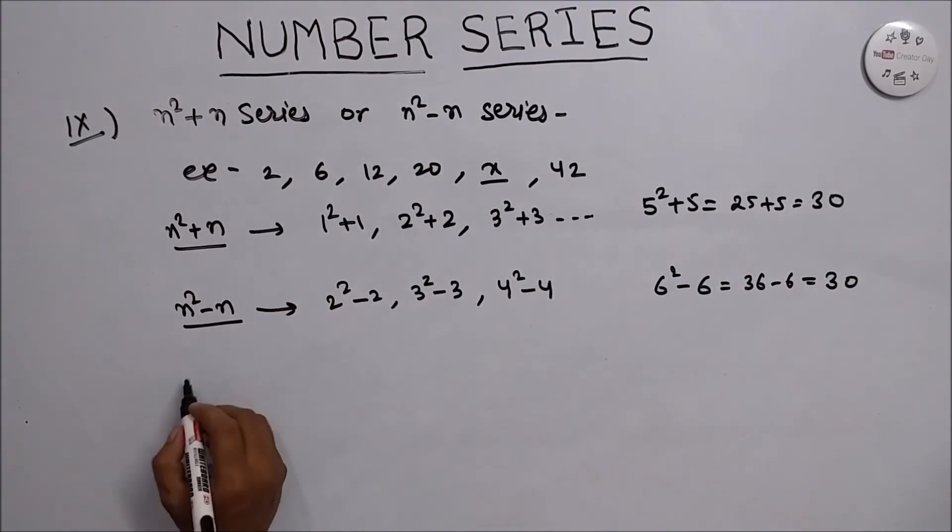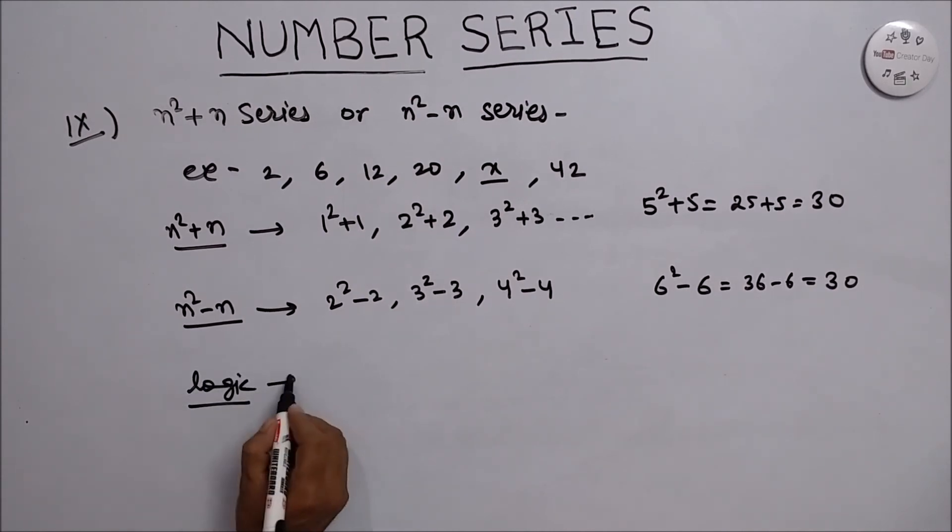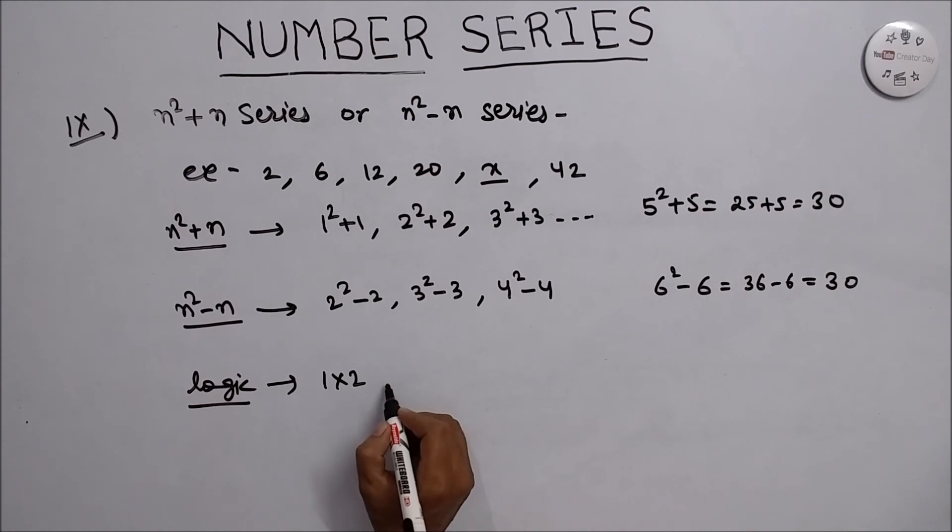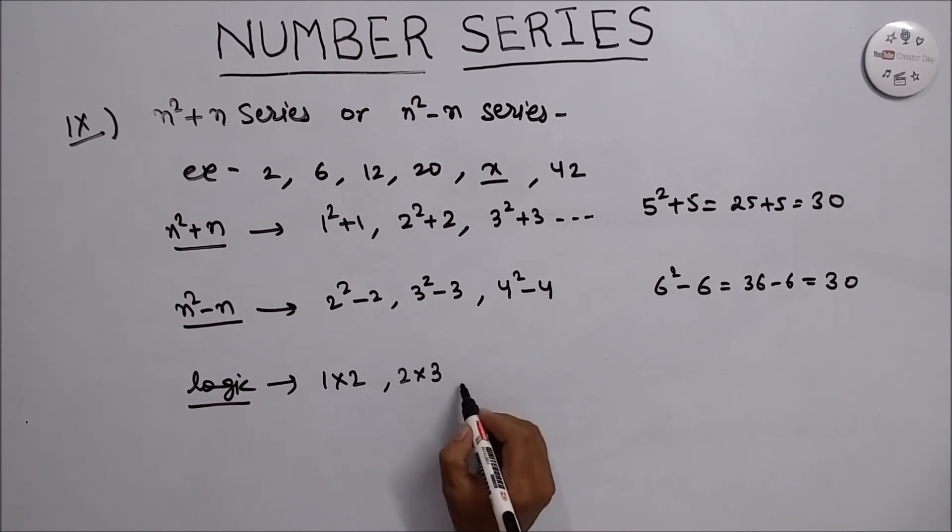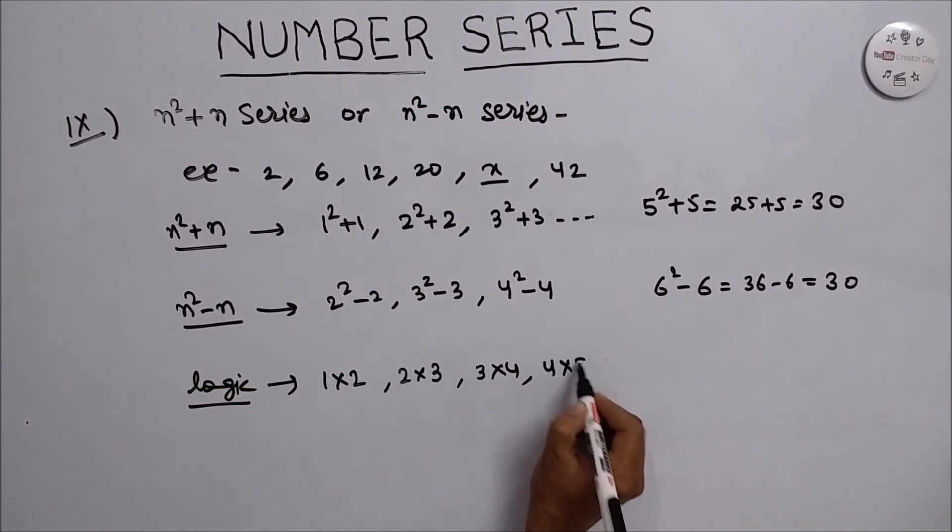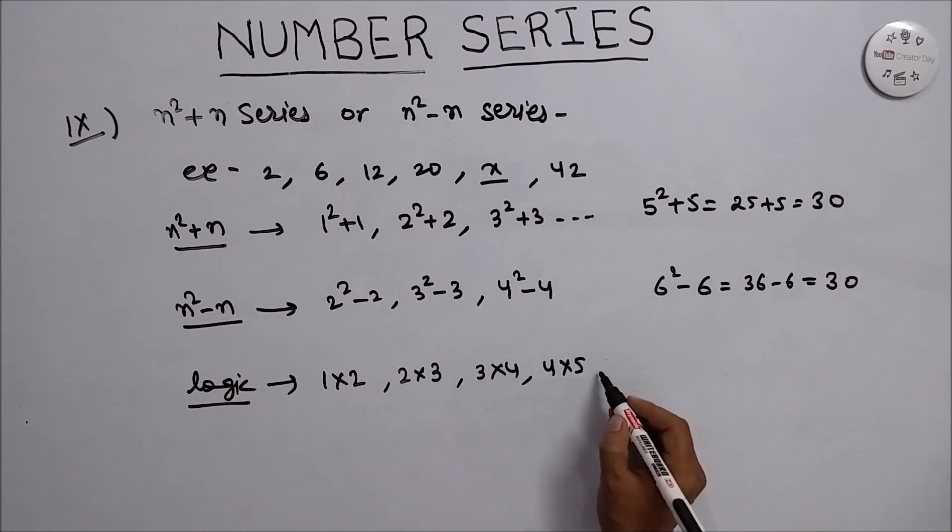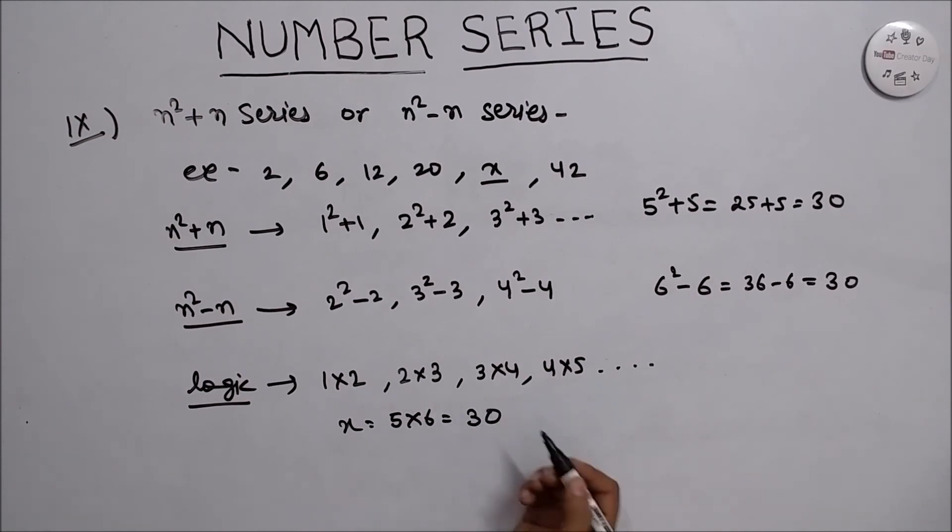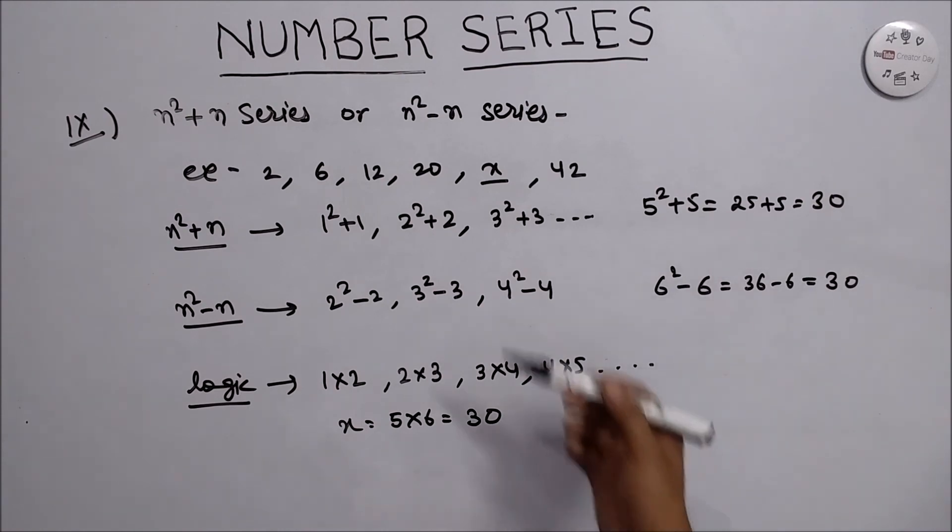Another logic to solve this type of series is by multiplication: 1 into 2, 2 into 3, 3 into 4, 4 into 5, and so on. So if we have to find the value of x through this logic, we can write 5 into 6, that is 30. By taking any method, you will get the same answer to solve the series.